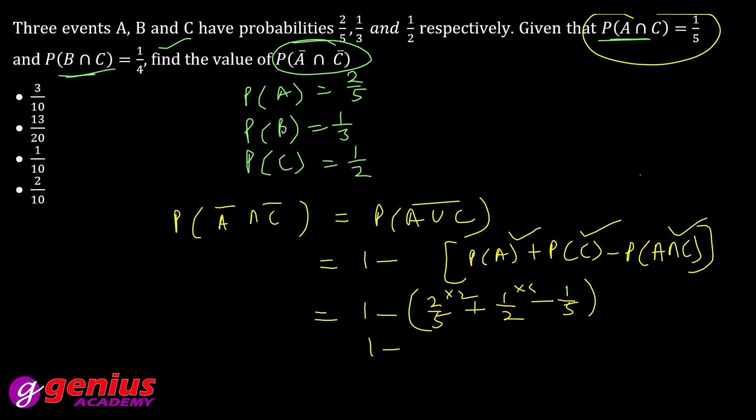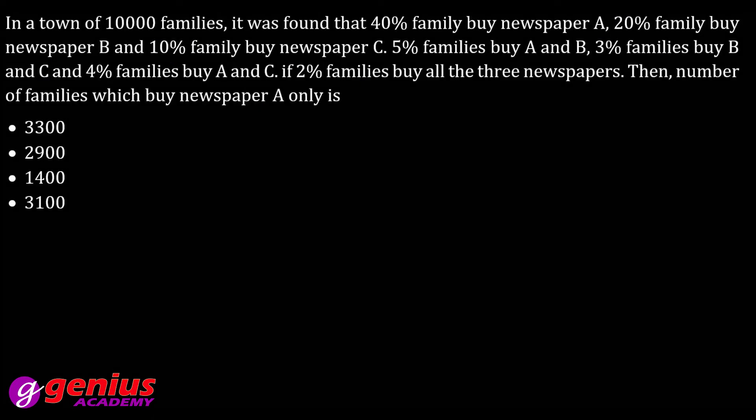P(A) = 2/5 plus C = 1/2 minus this 1/5. You will do LCM so 10. That means 4 plus 5 = 9, 9 minus 2 = 7/10, which is equal to 3/10. Your final answer.